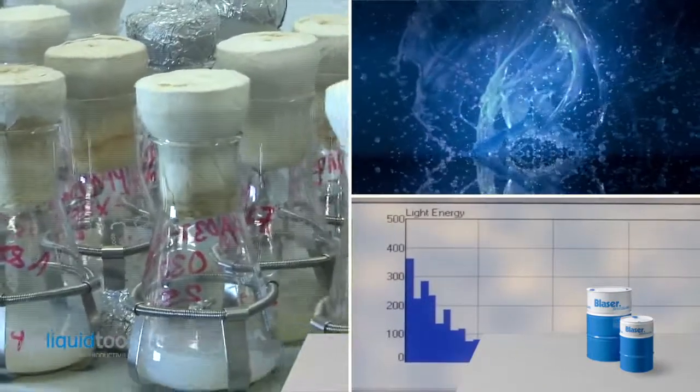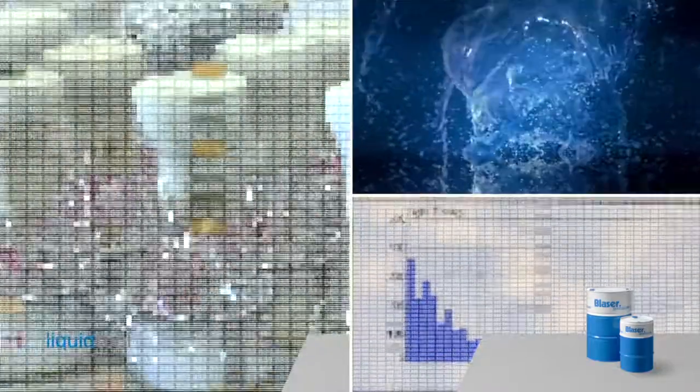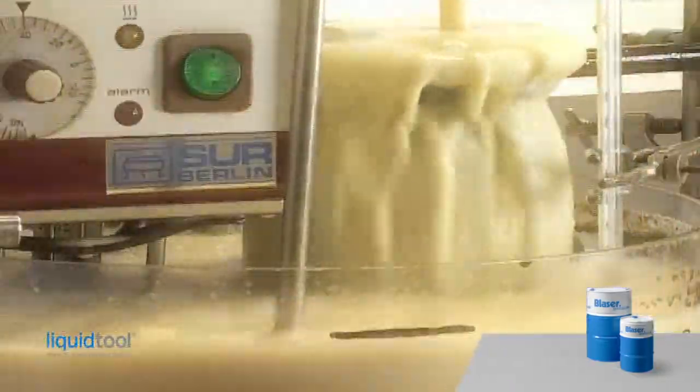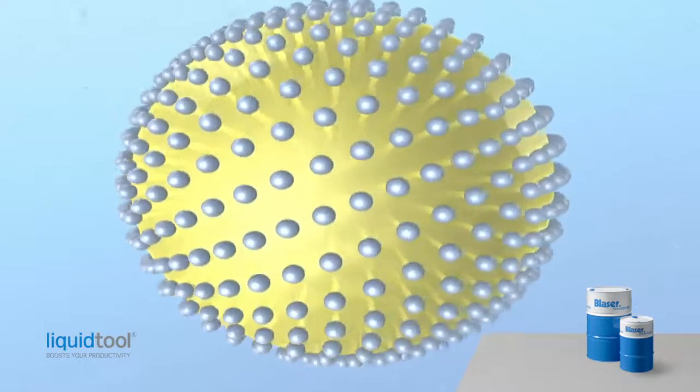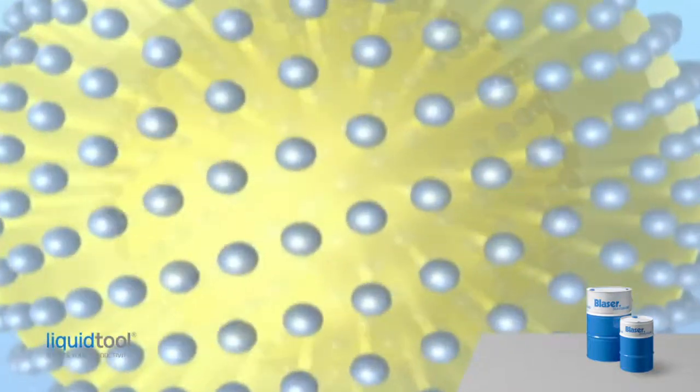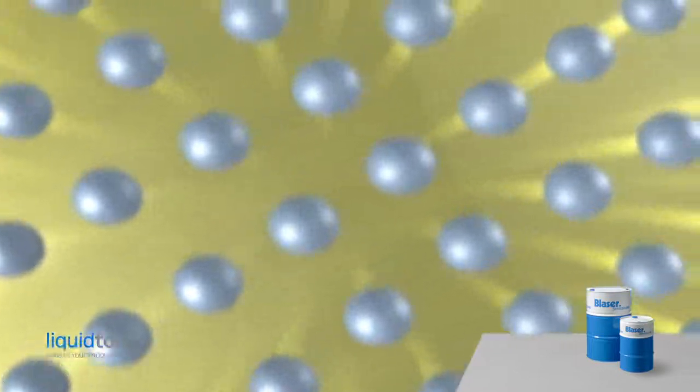A badly mixed emulsion also contains large droplets or agglomerates. They reach a diameter of several micrometers, about 20 times bigger than they should be optimally.